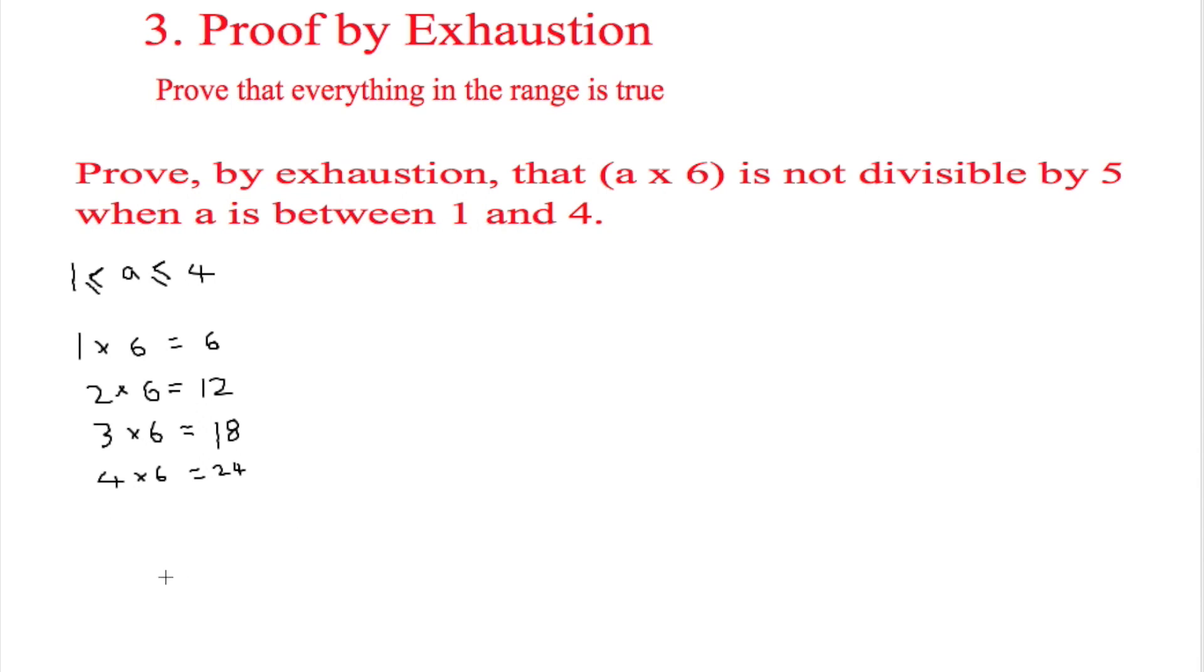Now this is all you have to prove, because if you went to 5 times 6 that obviously would be divisible by 5, but this is the range that you're working with. So that means that this statement is true and you have proved the statement by exhaustion.